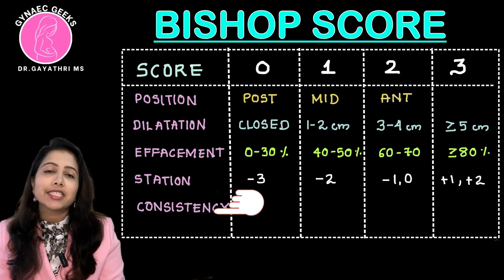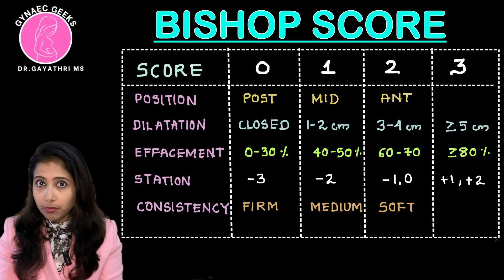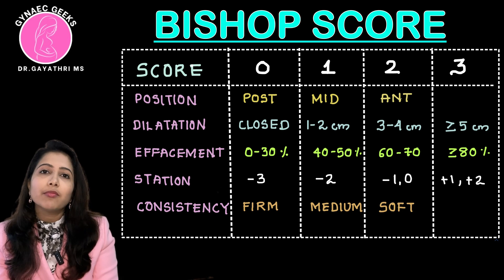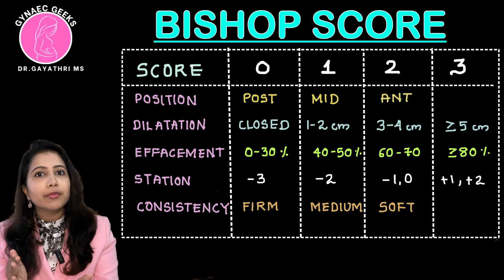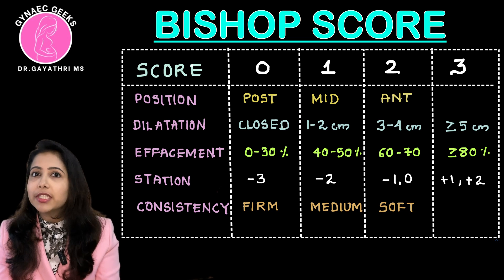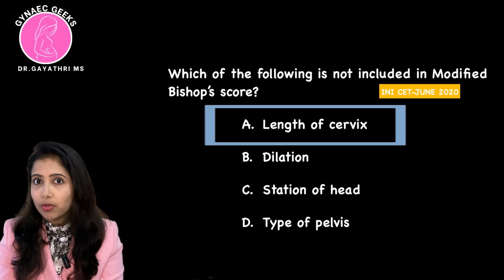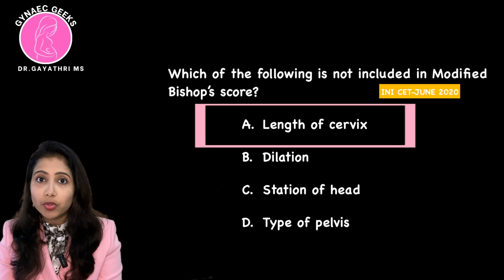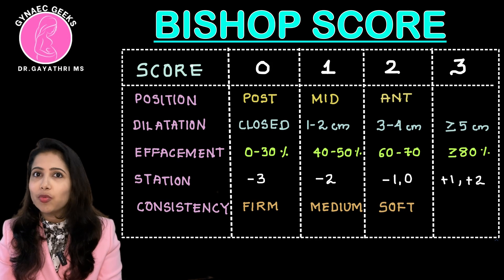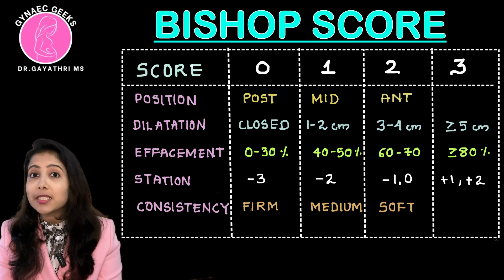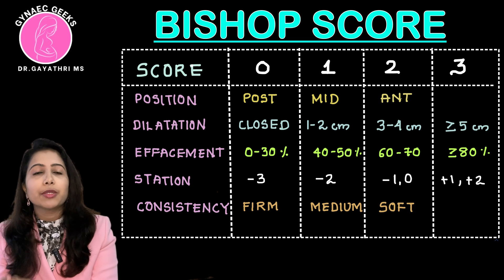Next is consistency. The consistency can be firm (score 0), medium (score 1), or soft (score 2). In the first question, cervical length was listed as an option — that is not part of the standard Bishop's Score because it is a component of the modified Bishop's Score.